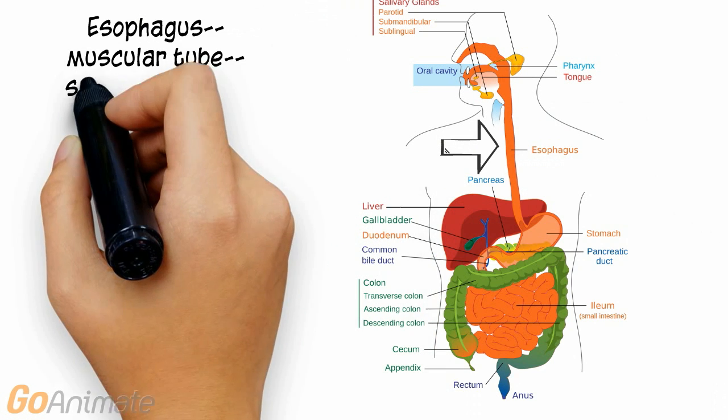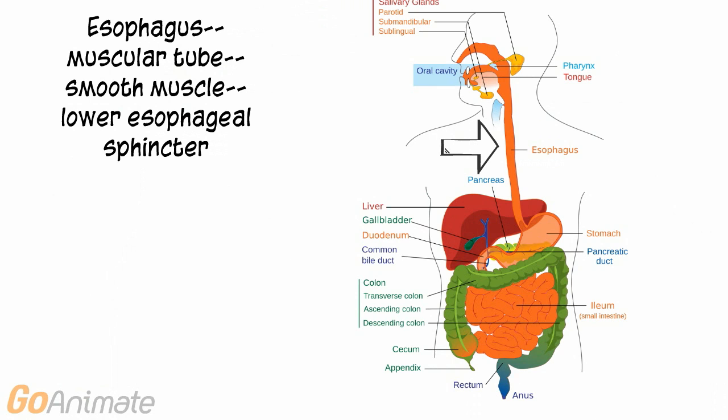The esophagus is a muscular tube containing smooth muscle. The lower esophageal sphincter is at the bottom of the esophagus. The sphincter opens during swallowing to let food into the stomach, and a peristaltic wave propagates through the esophagus during swallowing.